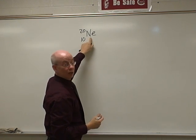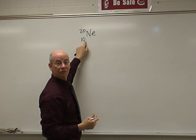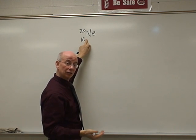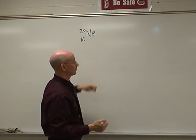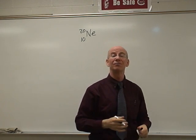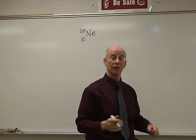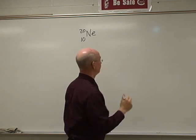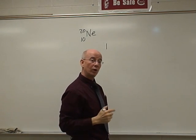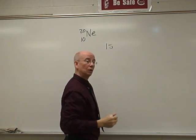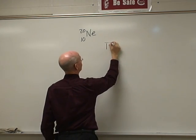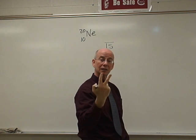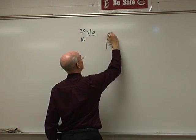We're going to look at the neon atom, which has a nuclear symbol of 10 and 20, an atomic number of 10, and atomic mass of 20, so it has 10 protons. Since it's neutral, it would also have 10 electrons and 10 neutrons. If we draw the electron configuration — meaning all four quantum numbers — we know we have 10 electrons to work with, so we always start with the lowest energy, which is energy level one. Energy level one only has one sub-level, S, and S only has one orbital, which I can draw like this.